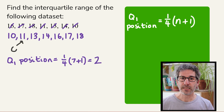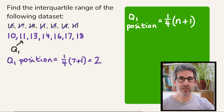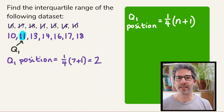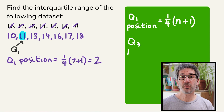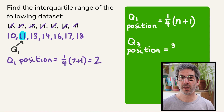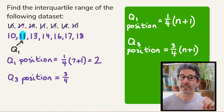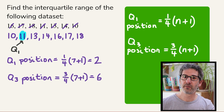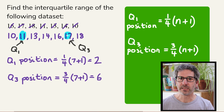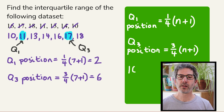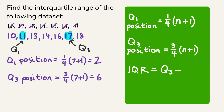So the lower quartile, Q1, is the second value along — which in this example is 11. The upper quartile is found by doing three quarters of (n + 1). With seven values, that's three quarters of 8, which is 6, telling us the upper quartile is the sixth value along — which is 17. To find the interquartile range, we subtract the lower quartile from the upper quartile: 17 minus 11 gives an interquartile range of 6.